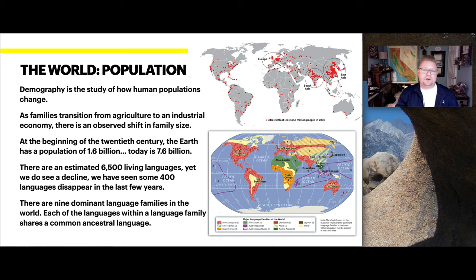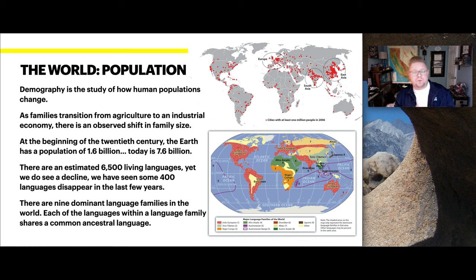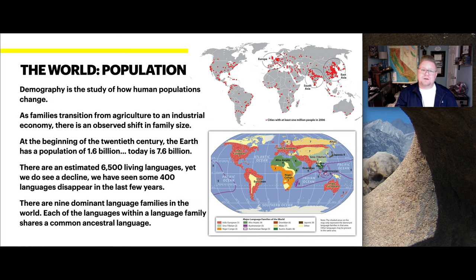Now we'll look at world population. Demography is the study of how human population changes throughout time. As families transition from agriculture to industrial economies, there is an observed shift in family size — agricultural or rural-based families tend to be larger, while urban families tend to be smaller. At the beginning of the 20th century, Earth had a population of about 1.6 billion. Today we're exceeding 7.6 billion people, and we are concerned we might be overpopulating given our limited resources.